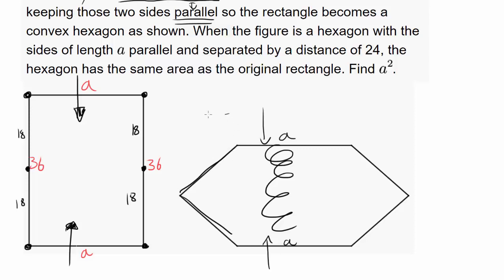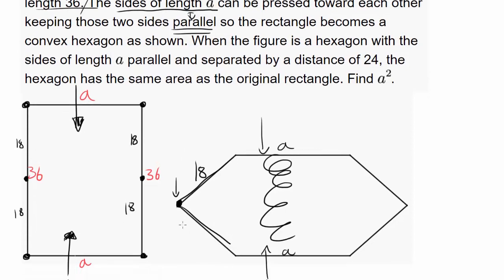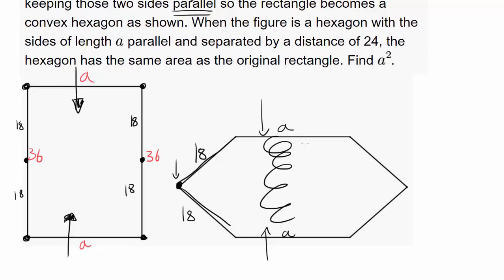This side used to be like this, but now as it's compressing, the side is squeezing inward like shown right here. And since you know that this hinge is separating the 36 side into two equal parts, it's at the midpoint, you know this has length 18, this has length 18. So that's very good to know.